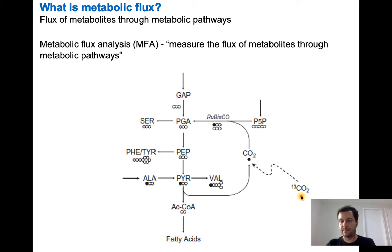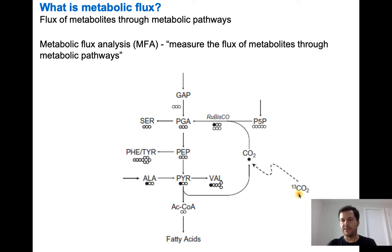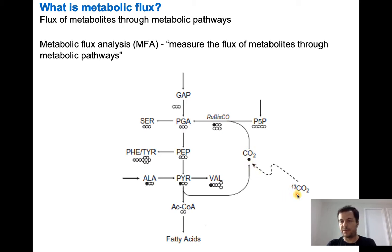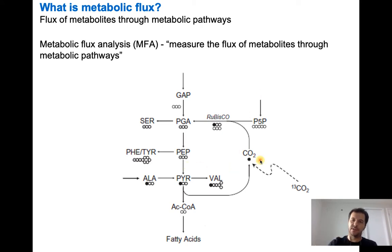Why do we use 13C? Because in the atmosphere we have 12C and 13C, but almost 99% of the carbon in the atmosphere is 12C — 13C is only about 1.1%. So when we put the plant or organism to use 13C instead of 12C, we are going to increase the amount of 13C in the metabolites, and then by mass spectrometry we can detect this increase.